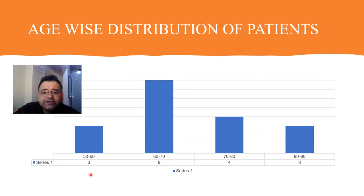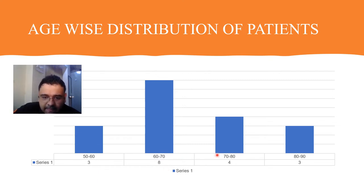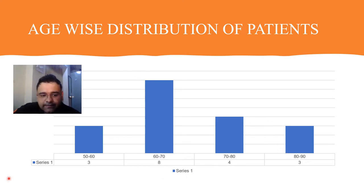Age-wise distribution of patients enrolled in the study: in the 50 to 60 year age group, 3 patients were examined; 60 to 70 years, 8 patients; 70 to 80 years, 4 patients; and 80 to 90 years, 3 patients were examined.